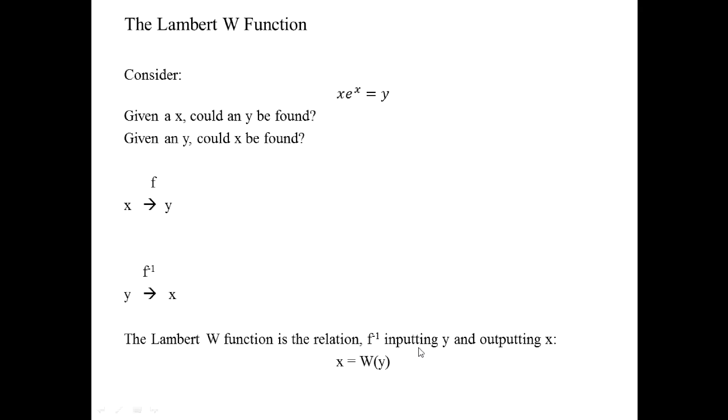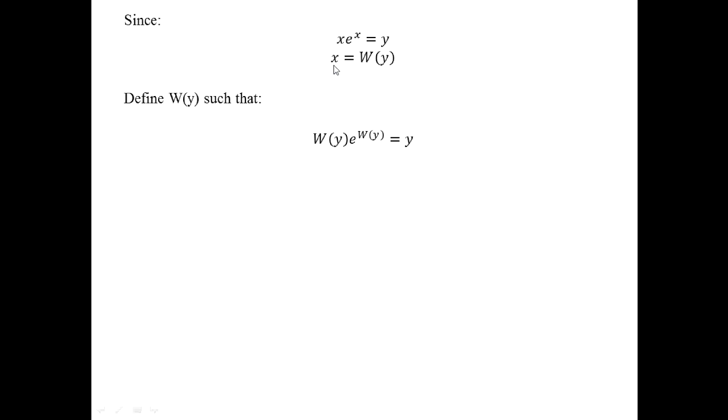So this relation f inverse inputs y and outputs x, and I'll give that the symbol W. So x is going to be equal to W of y. As we said before, x times e to the x is going to equal y. The forward process is where I give you some value of x, and you tell me what value of y is associated with that. And the backward process is I give you some y, and then you apply the operation W to give me some value of x. So we set up the function W such that W(y) times e to the W(y) is equal to y. To see why this is true, all you have to do is look at x equals W(y) and plug that into the first line. So W(y) times e to the W(y) equals y — this serves as the definition of the Lambert W function.